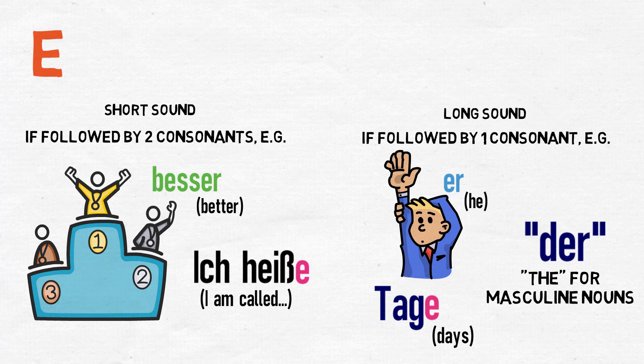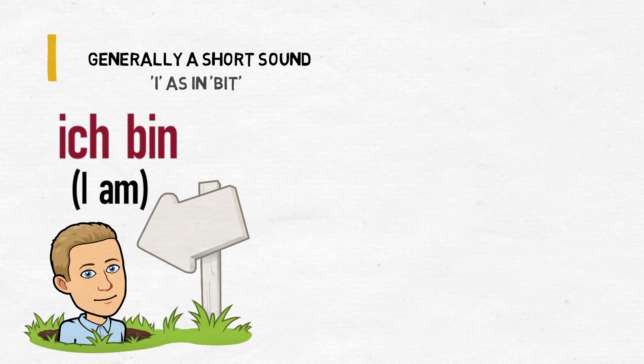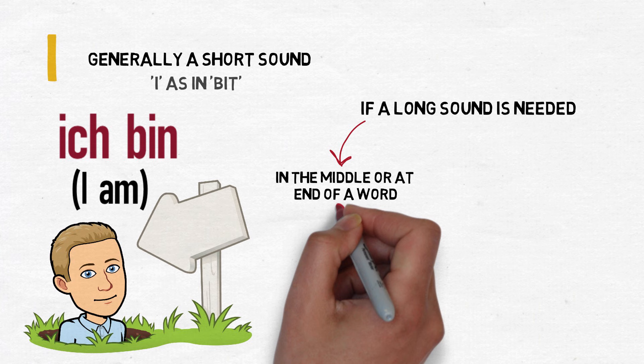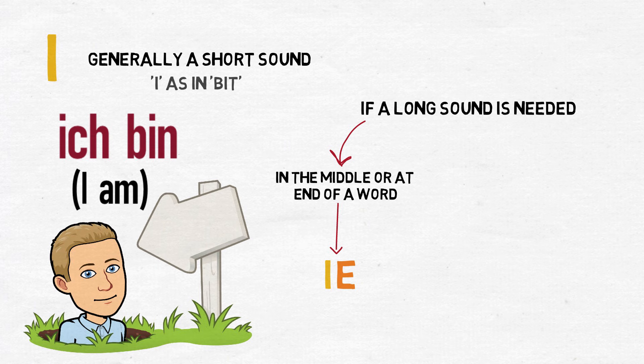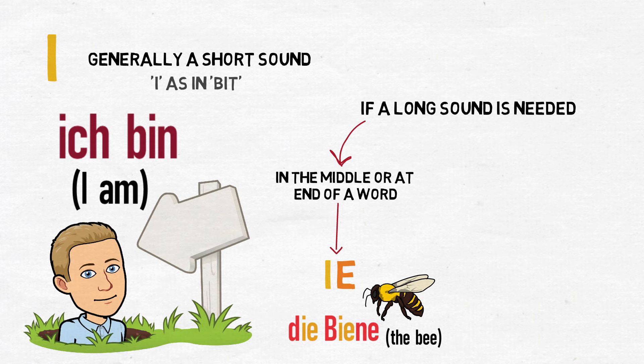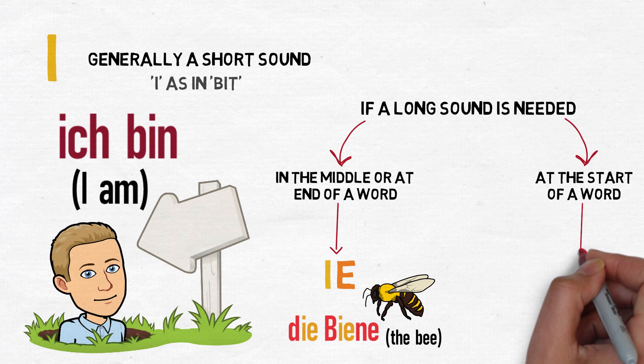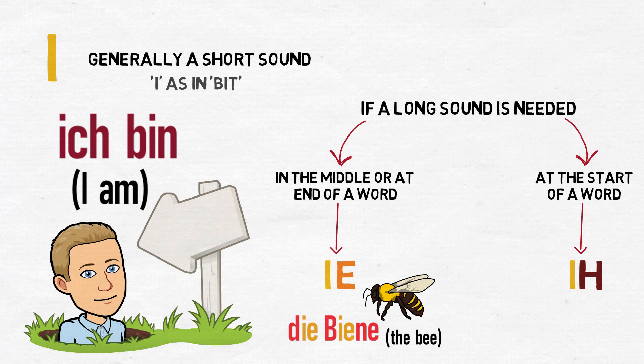The German letter I tends to be short, such as in the English word 'bit' — for example, ich bin, I am. If a long sound is required, I will generally be combined with another letter. Combined with E, the combination IE sounds like a long E, such as die Biene, meaning the bee. If the long I sound occurs at the start of a word, it will be combined with an H, though this is rare — generally only seen in a few words, including two German words for him: ihn and ihm.